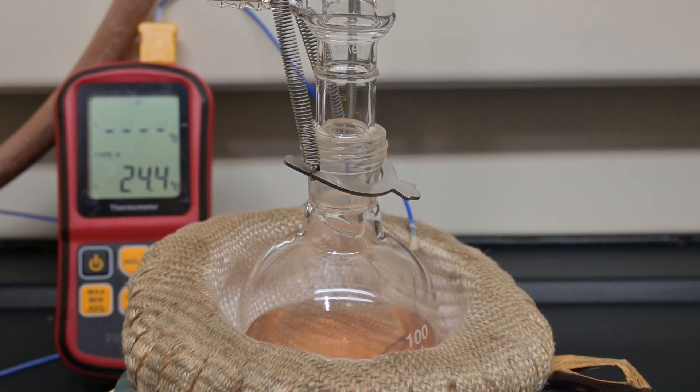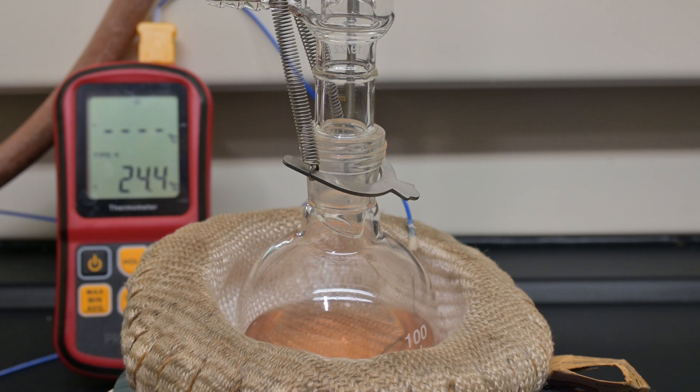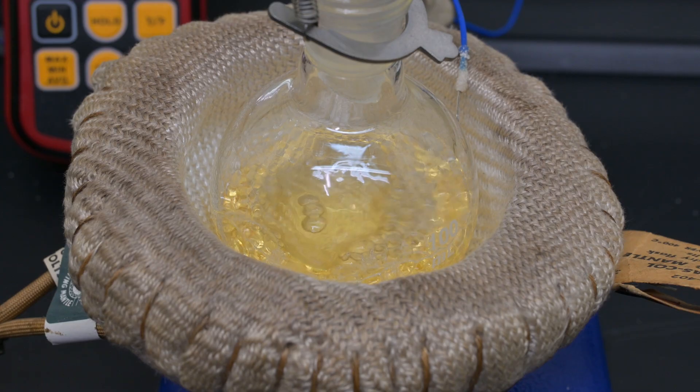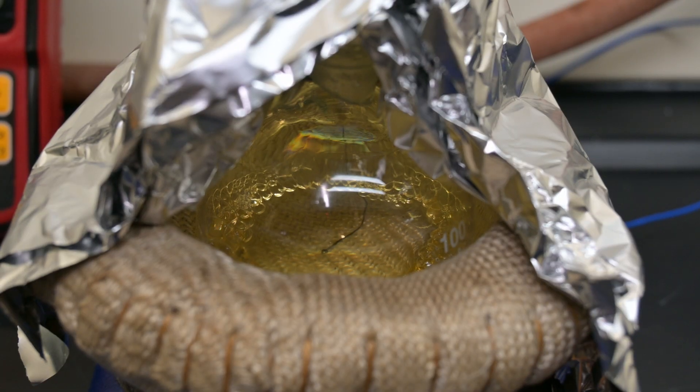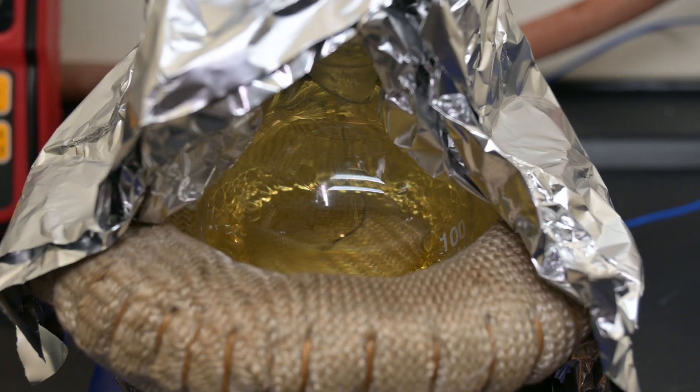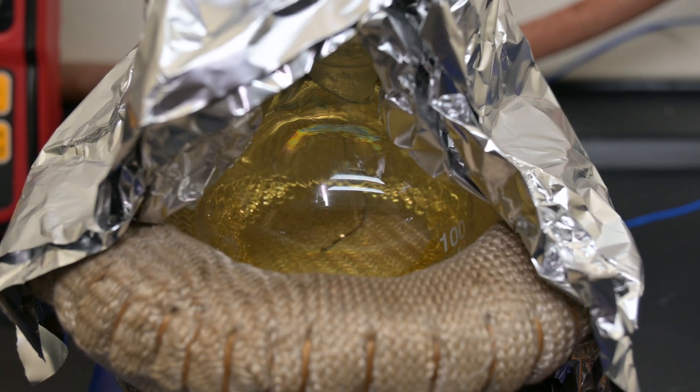The mantle temperature was ramped up slowly. Material started working its way up the column. Material started coming over below the temperature at which styrene comes over, but rose quickly. The flask was switched out and the product was then collected.